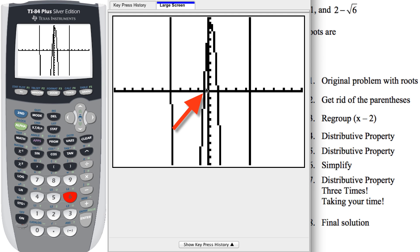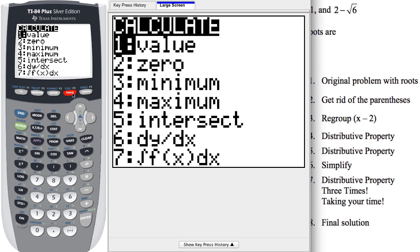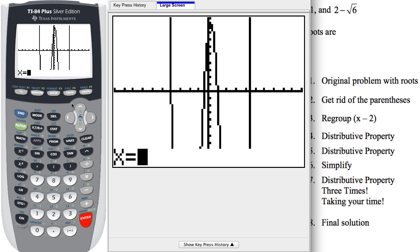But what I want to do is find these other two, this guy and this guy right there and I'm hoping that those are the 2 plus root 6 and the 2 minus root 6 zeros. So what I want you to do is hit the second and then calc or second trace and that will give us the calculate menu. Now see that first thing where it says value? That's what we want to do. So we're just going to hit enter.